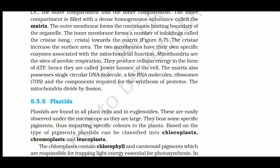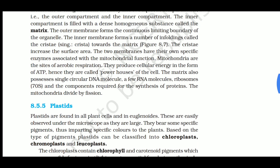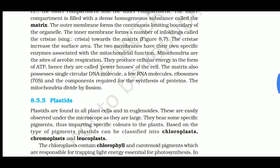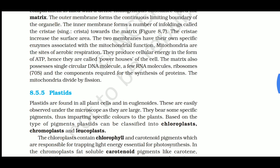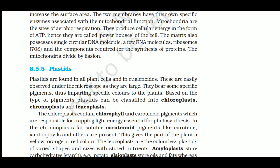The matrix also possesses a single circular DNA, a few RNA molecules, ribosomes, and the components required for protein synthesis. The ribosomes present in mitochondria are 70S ribosomes. The ribosomes in chloroplasts are also 70S, and the ribosomes in prokaryotic cells are also 70S. The mitochondria divides by fission.